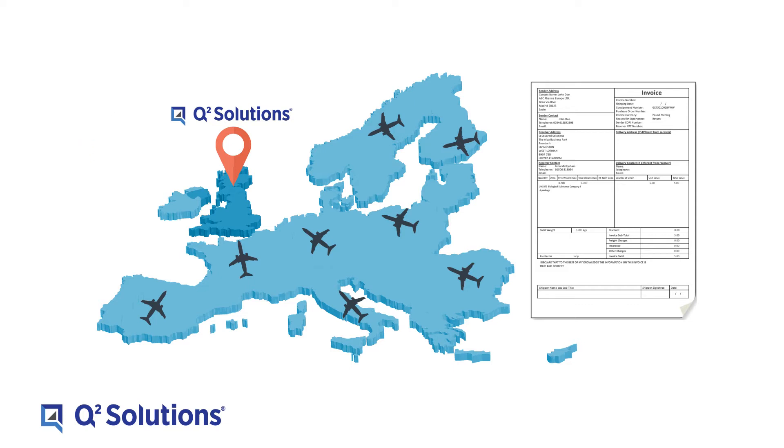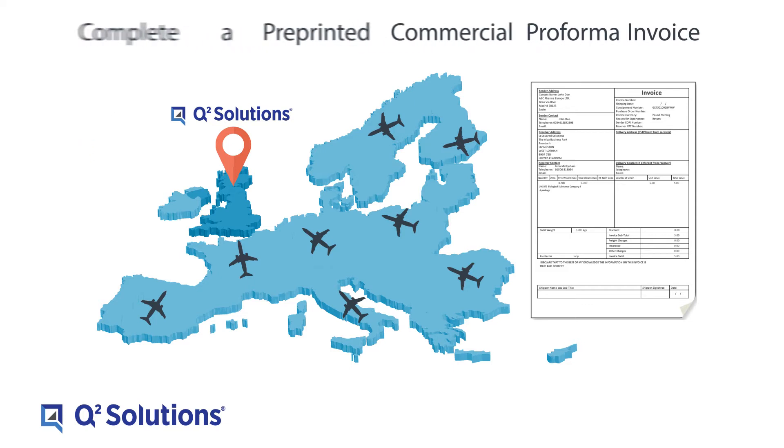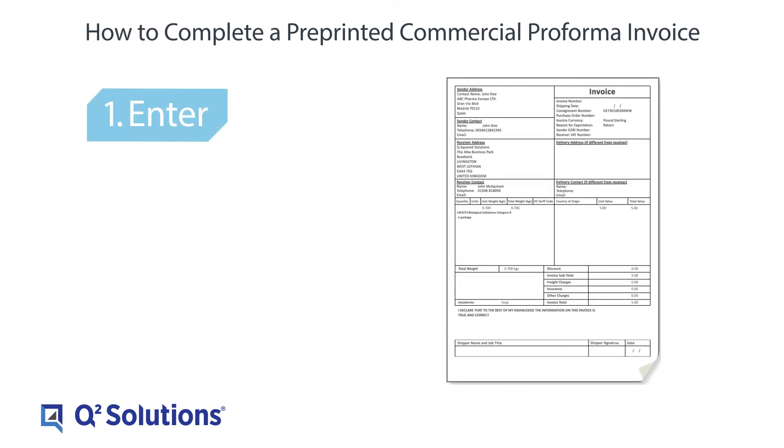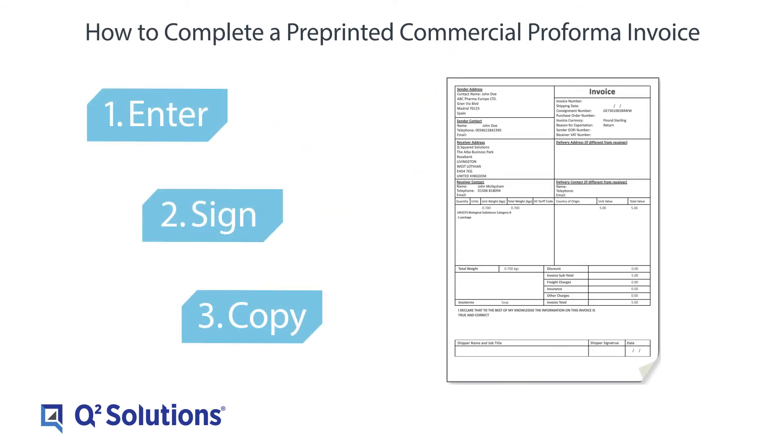Completing a commercial invoice requires three simple steps: Enter, sign, and copy.